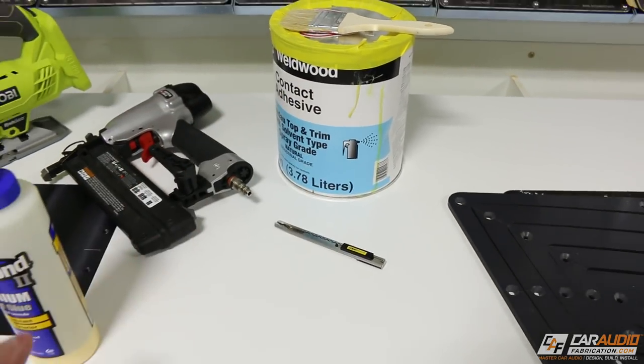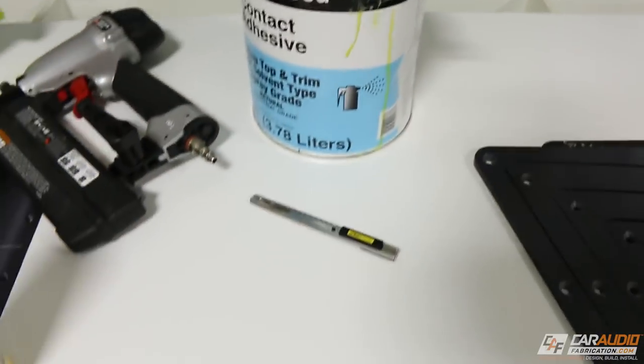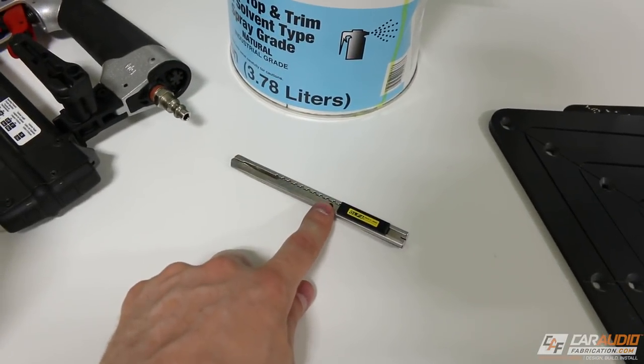I'm going to be using a brad nailer to secure the box together, but you could also just use a drill along with some screws. We're of course going to need wood to build the box out of, wood glue to secure everything together, and when we get to the upholstery process, we're going to need contact adhesive.